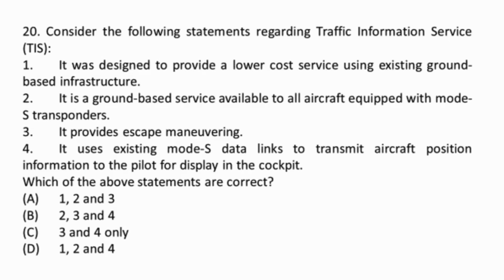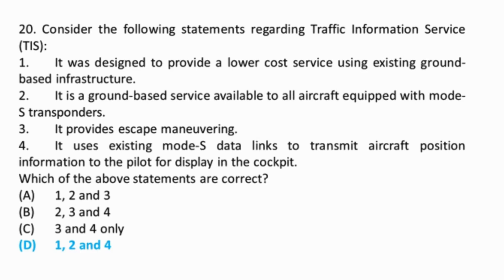Question 20: Traffic Information Service is the broadcast of transponder-based mode C or mode S traffic information derived from ATC ground-based surveillance systems. TISB provides ADS-B-equipped aircraft with a more complete picture of surrounding traffic. The Traffic Alert and Collision Avoidance System (TCAS), following identification of potential collisions, automatically negotiates a mutual avoidance maneuver between two or more conflicting aircraft. Thus statements one, two, and four are correct.